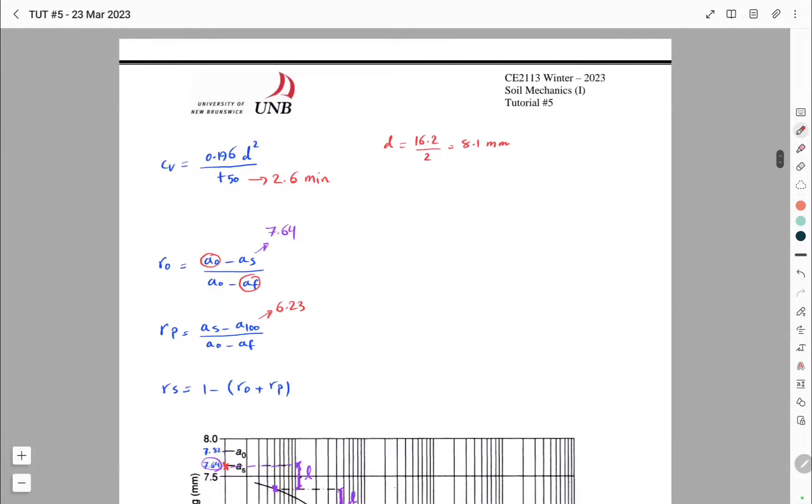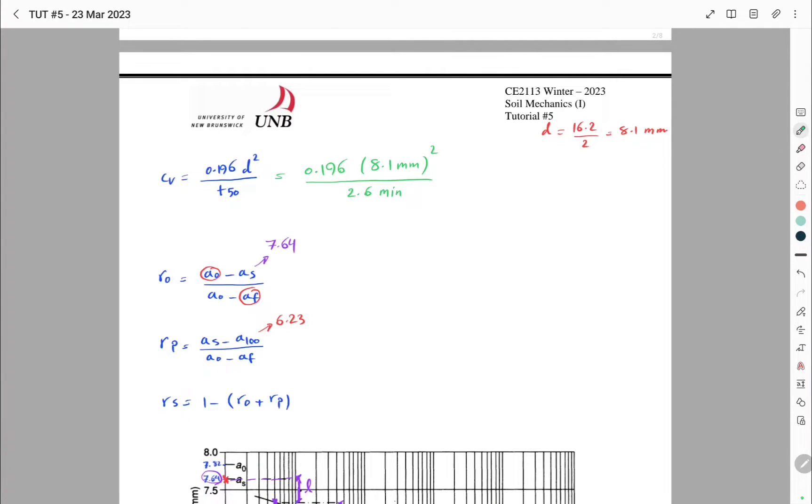And we have all the values that we need to determine the requested coefficients. So we're going to start with CV. We have 0.196 times 8.1 millimeter to the power of 2 divided by T50.